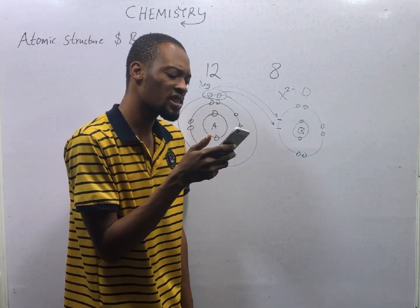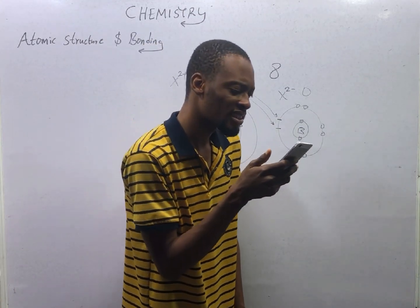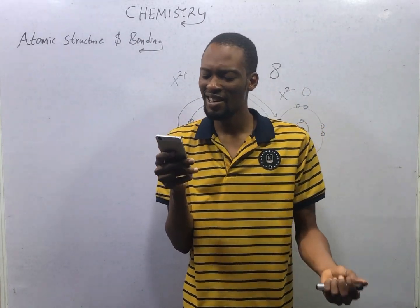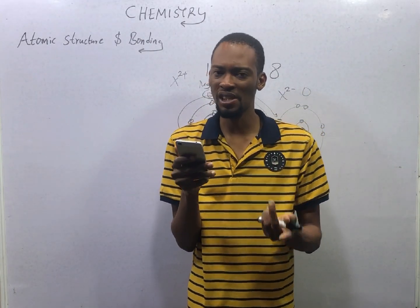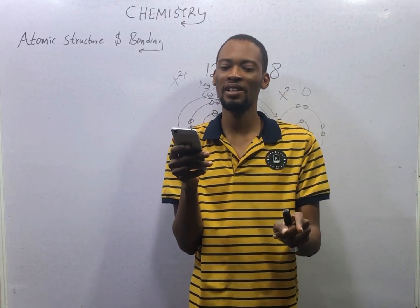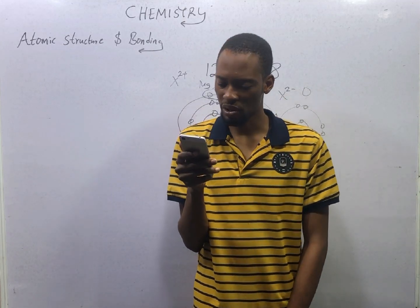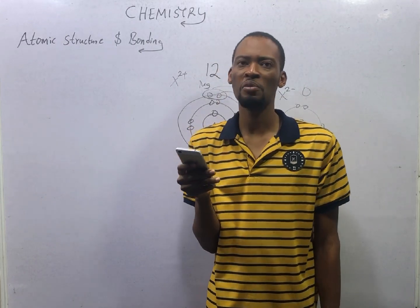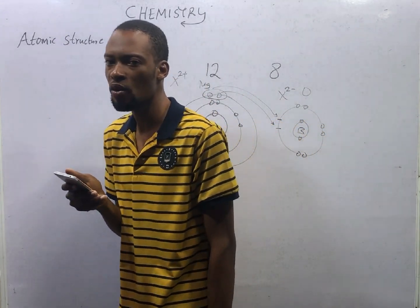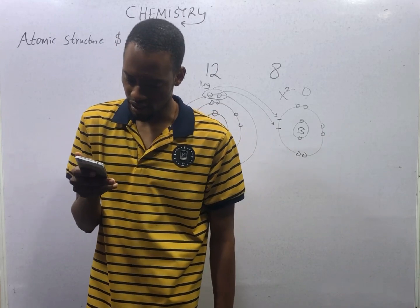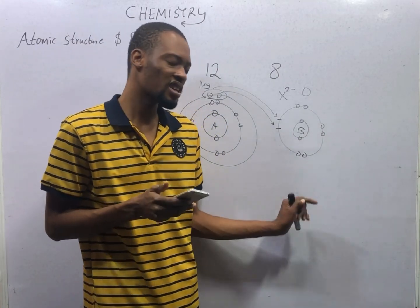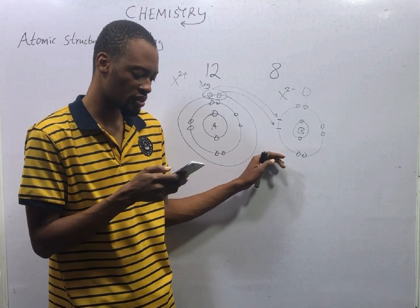The weakest attractive force that can be observed between two molecules is: A, ionic; B, covalent; C, coordinate covalent; D, van der Waals. The weakest force that can be observed between two molecules is the van der Waals forces, while ionic bond is the strongest bond that exists between atoms.